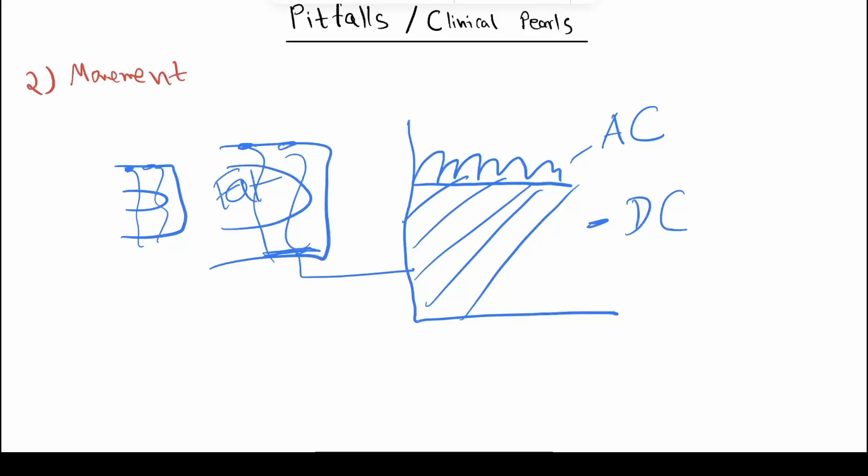The problem with this is the AC is only 2% of the entire reading. So if you move or if the patient moves or if the probe isn't placed perfectly or it's not the right size, it increases the chances of error because it's such a small percentage of the whole thing.